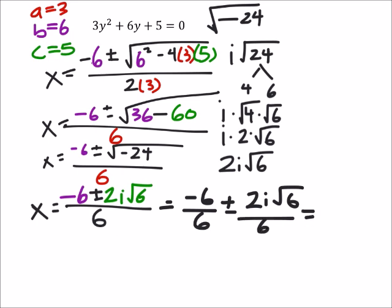Well, negative 6 over 6 is negative 1. Then, I'd have plus or minus 2 divided by 6, that's going to give us 1 third. So, I'd have i square root of 6 over 3 now. And this is an acceptable answer.